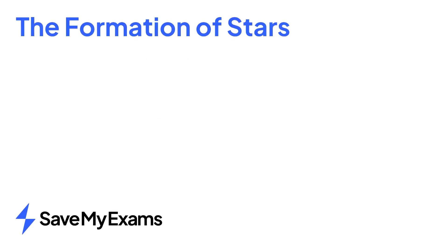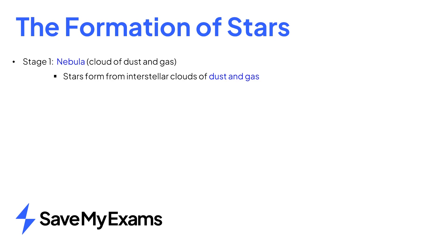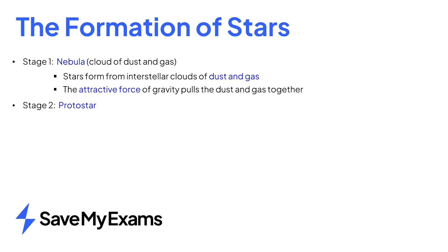In summary, a nebula is the first stage in the life cycle of a star — a cloud of dust and gas in which stars and planets are born. Hydrogen and helium come together under the attractive force of gravity. A protostar is the second stage in the life cycle, as gas and dust become more compressed as they collapse under gravity.